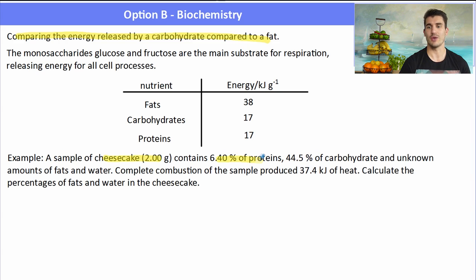So here's a sample calculation. A sample of two grams of cheesecake contains 6.4% of proteins, 44.5% of carbs, and an unknown amount of fats and water. Complete combustion of the sample produced 37.4 kilojoules of heat. Calculate the percentages of fats and water in the cheesecake.